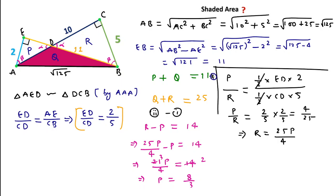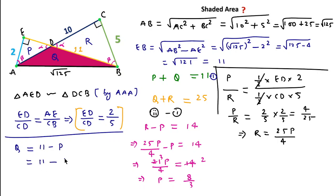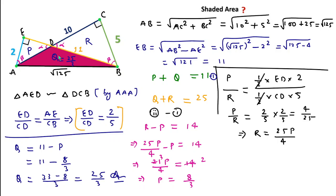Now substituting P = 8/3 into the first equation P + Q = 11, we get Q = 11 − 8/3 = (33 − 8)/3 = 25/3. So the area of the shaded region Q equals 25/3 square units. This is the required answer.